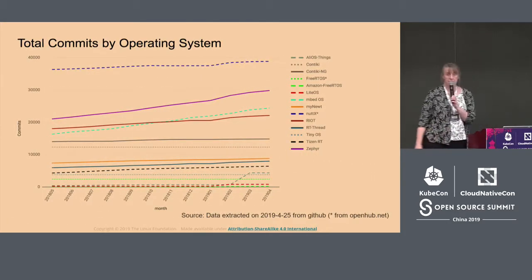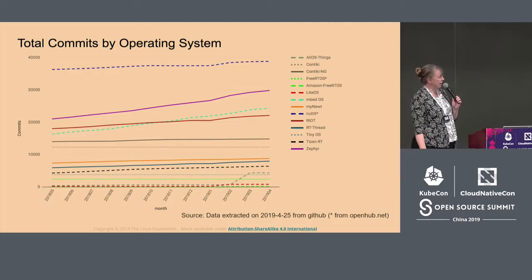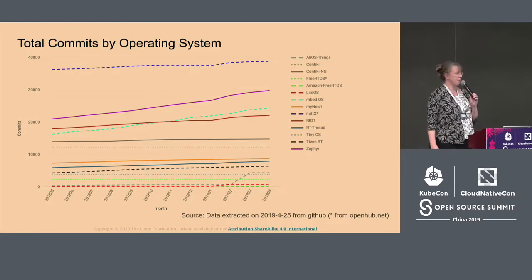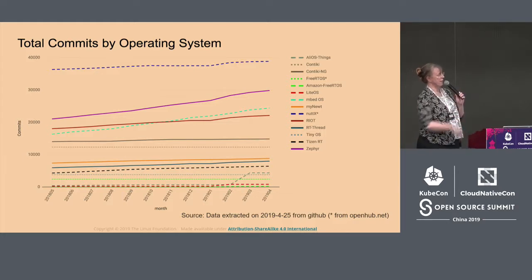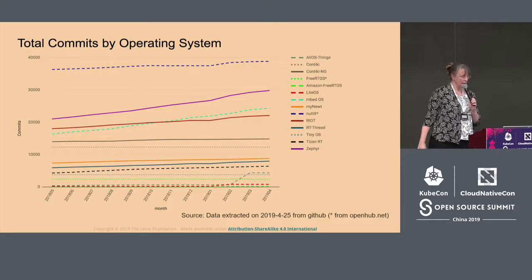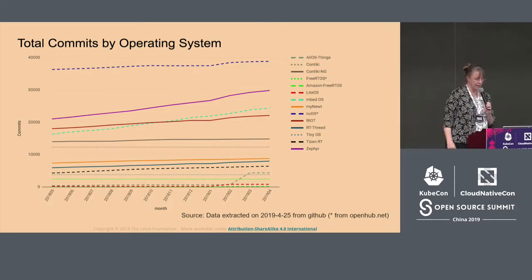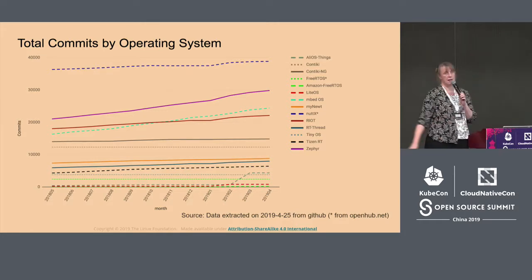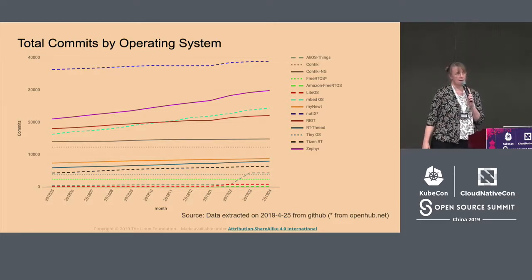With those contributors comes commits. The two that are probably strongest in terms of a trend line are Zephyr and mbed. They're going roughly parallel but are on an intercept course. To give context, the top line is NuttX, which has been around since 2007 attracting contributors. Zephyr has been around for just over three years, so the fact that we're almost at that level is saying we're doing something right.